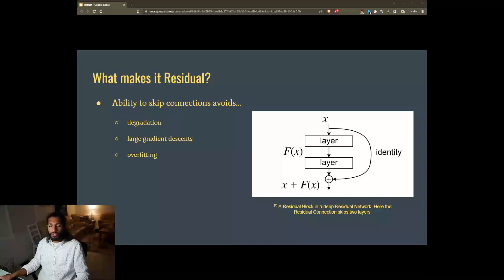By using this shortcut or residual connection, ResNet ensures that the convolutional layers learn only the incremental changes or residuals needed to refine the input, rather than trying to learn the complete transformation. This helps in alleviating the vanishing gradient problem since the gradient can flow through the shortcut connection, allowing easier learning of the identity mapping.